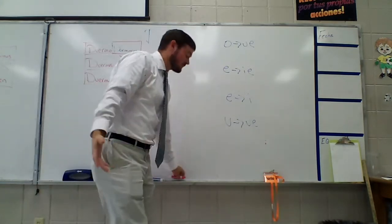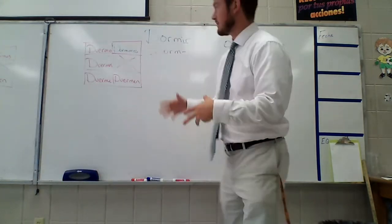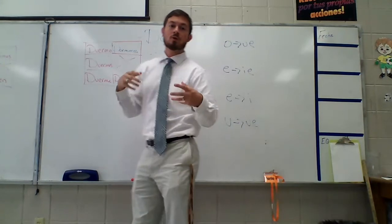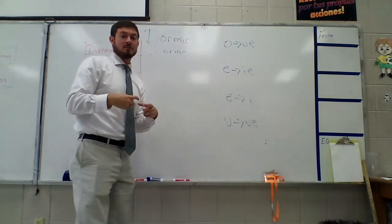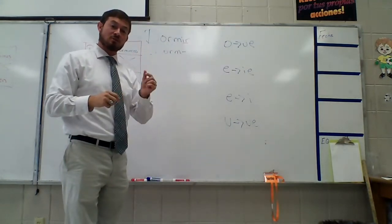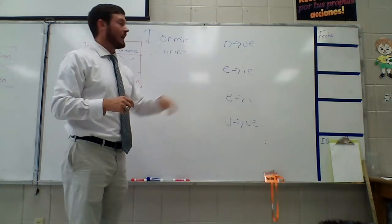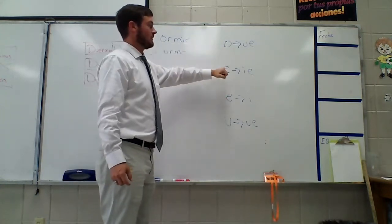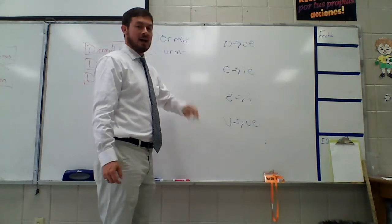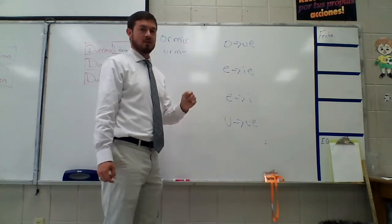Now, if you notice the endings don't change at all. It is just the stem. So we are still using the exact same endings that we've been using. The stem is just going to change a little bit with these verbs. And there are, again, four groups. O to U-E, E to I-E, E to I-A, and then there's just one that goes U to U-E.